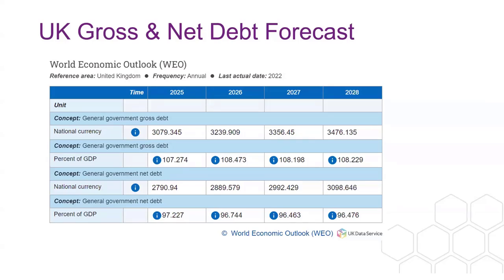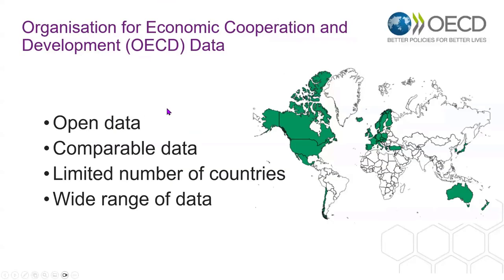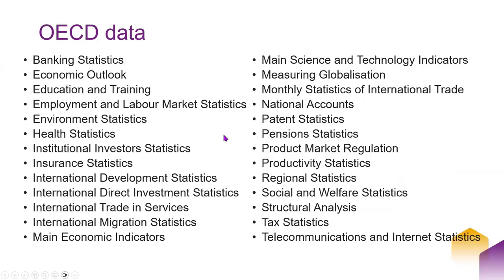The OECD covers an enormous range of topics in a lot of detail. The data are open and comparable, but for the most part only cover OECD member countries — advanced economies shown in green on the map — covering an absolutely enormous array of data sets and themes. We don't have all of these yet; we have the most used one at the moment, plus telecommunications and internet statistics which we used as a test data set when uploading for the first time. We will get them all in and up to date in the next year.